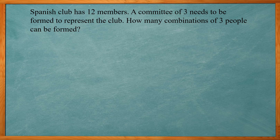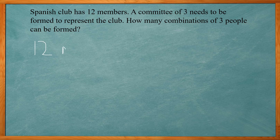The Spanish club has 12 members and a committee of three needs to be formed. How many combinations of three people can be formed? There's no order within the group — no president, secretary, or vice president — so it's a combination. We have 12 to choose from and need to choose three. Enter 12 in your calculator, go to PRB, choose the combination option, type three, and press enter. That gives you 220.